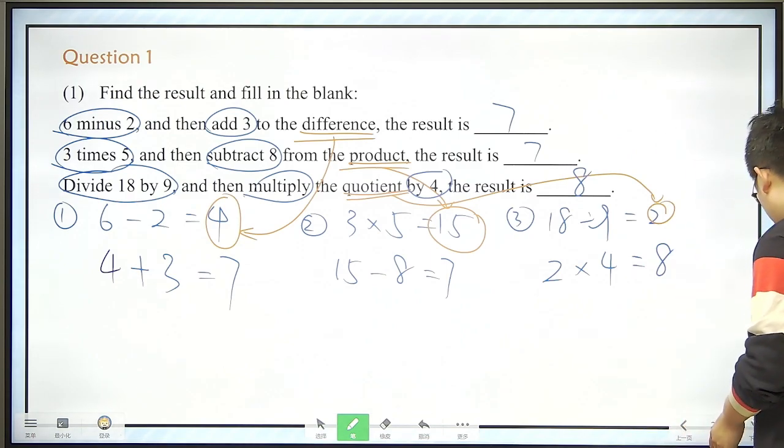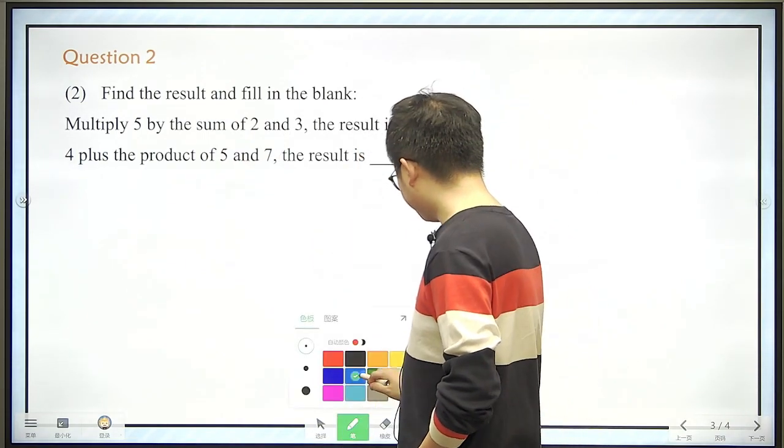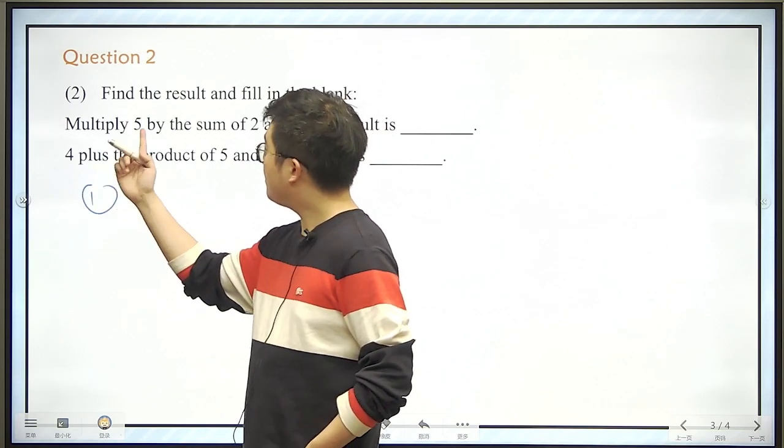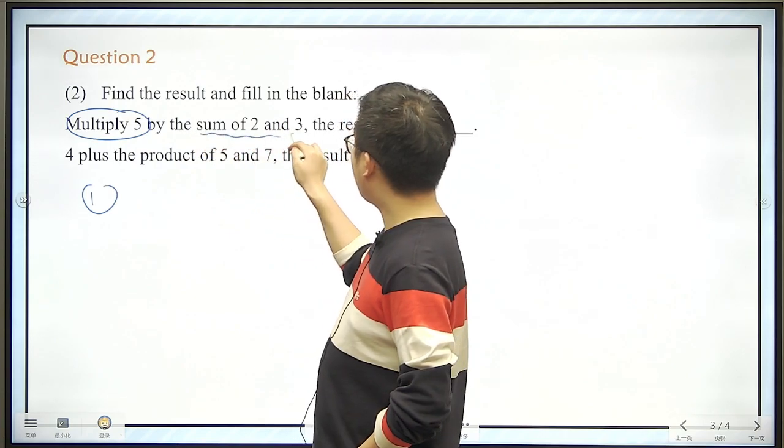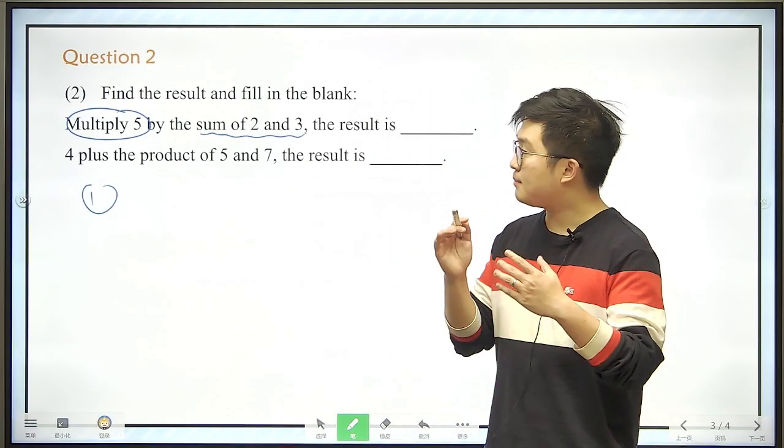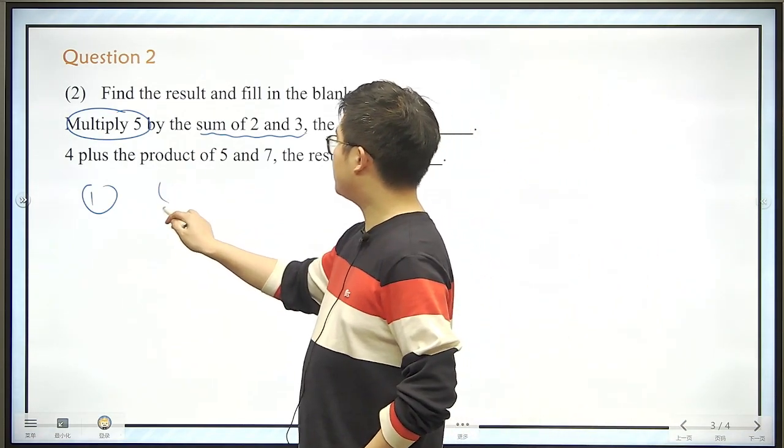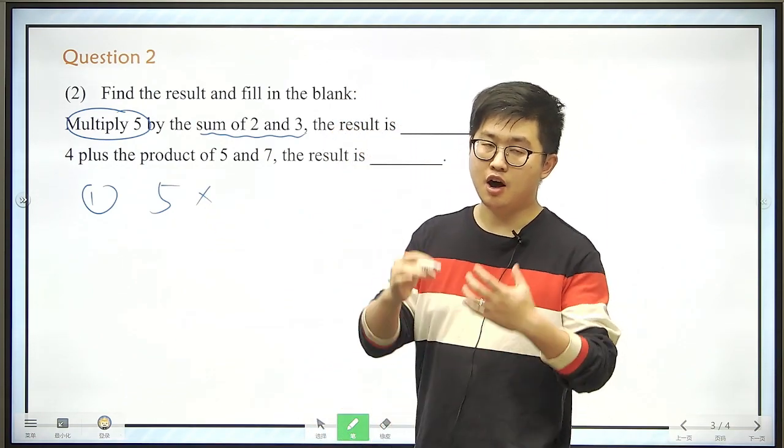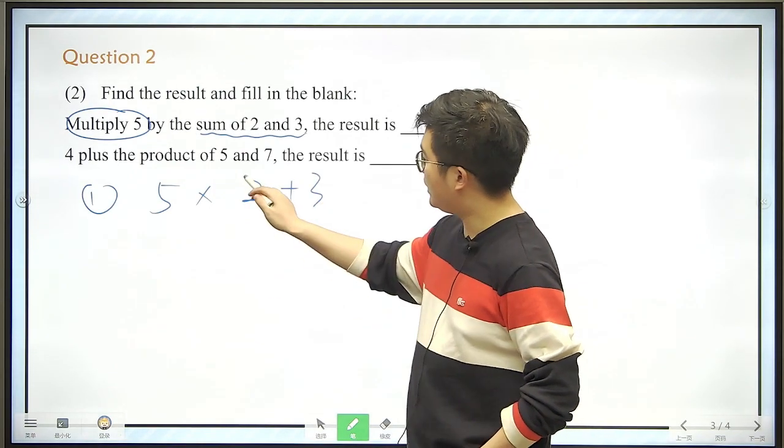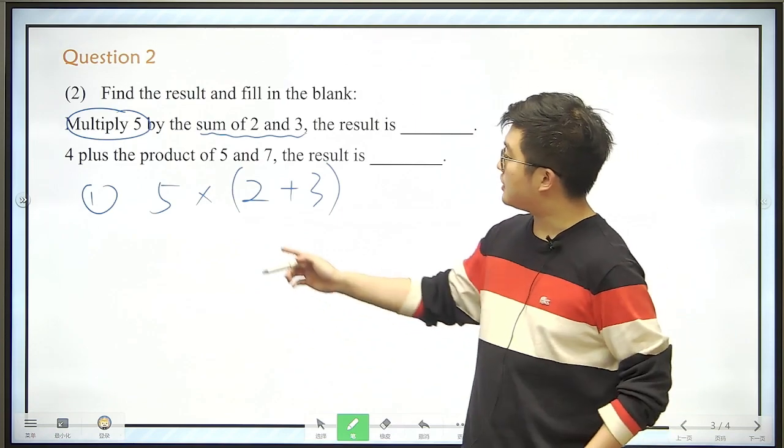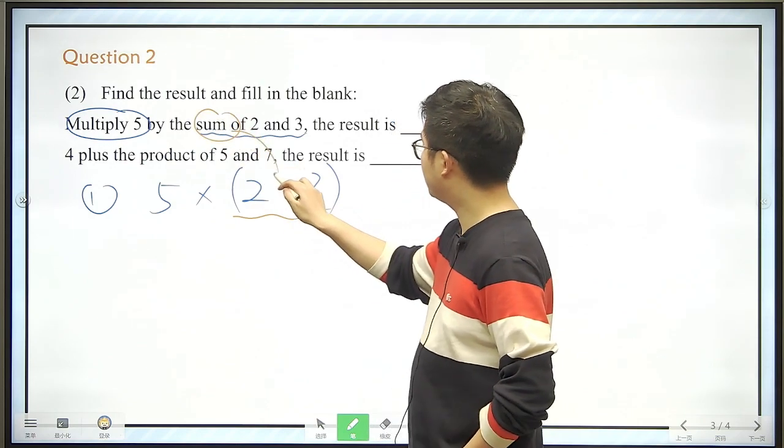Alright, then let's move on to something a little bit more complicated. We still need to find the result. The first one is, multiply 5 by the sum of 2 and 3. Alright, multiply 5 by the sum of 2 and 3, so multiply 5 by what? By the sum of 2 and 3, that means 2 plus 3, but we need brackets here, because it says the sum of 2 and 3, and this is the sum.